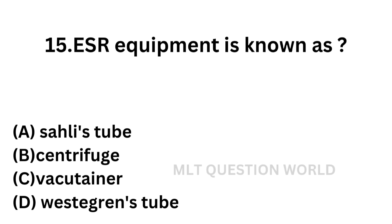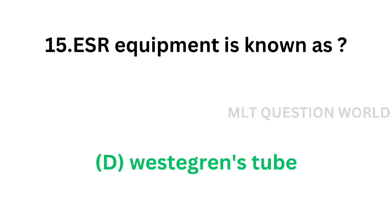Question number 15: ESR equipment is known as. Option A: Sahli's tube. Option B: Centrifuge. Option C: Vacutainer. Option D: Westergren's tube. Sahli's tube is used for hemoglobin estimation, vacutainer is for blood collection, and Westergren's tube is used for ESR estimation. The correct answer is option D: Westergren's tube, which is used for ESR estimation.